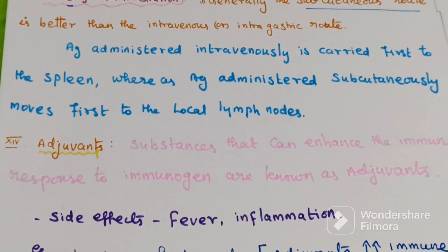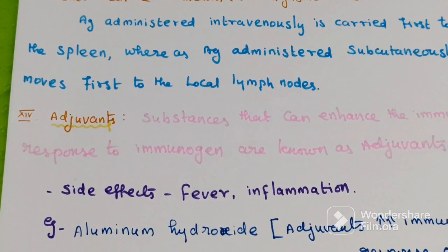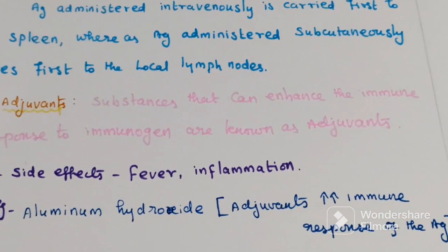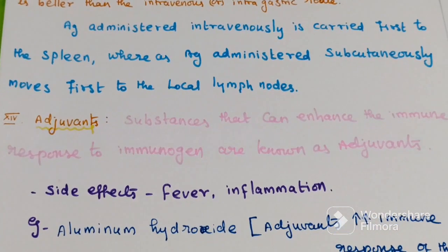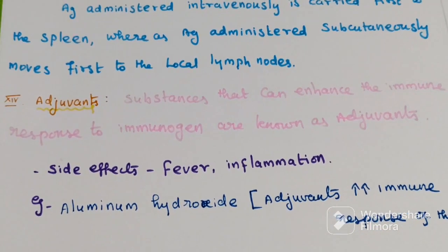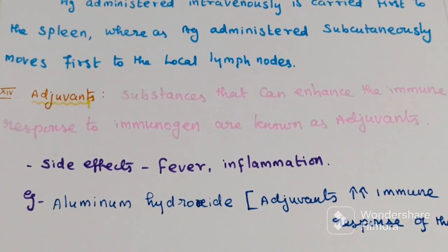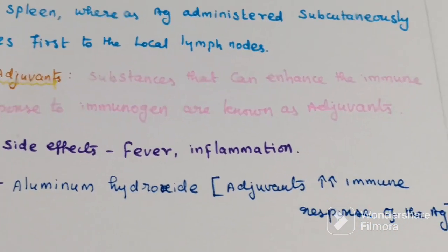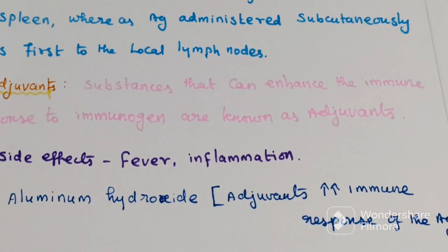The fourteenth and last factor is adjuvant. Substances that can enhance the immune response to an immunogen are known as adjuvants. However, the use of adjuvants is often hampered by undesirable side effects such as fever and inflammation. For example, aluminum hydroxide is an adjuvant that increases the immune response to an antigen.